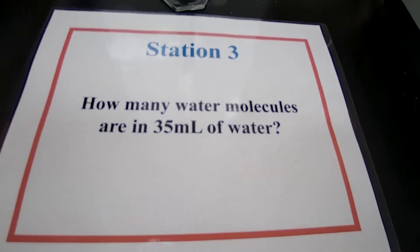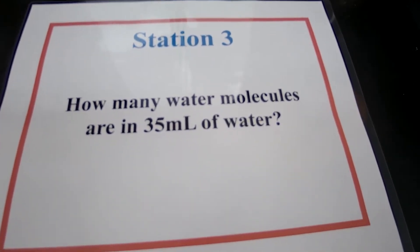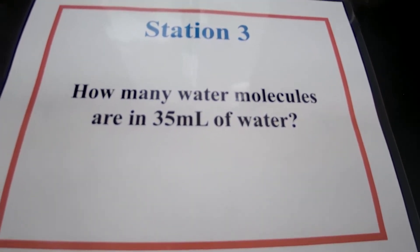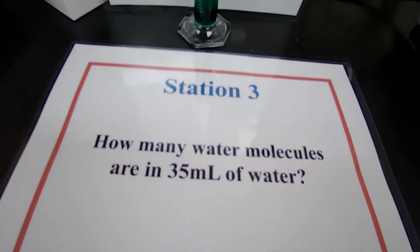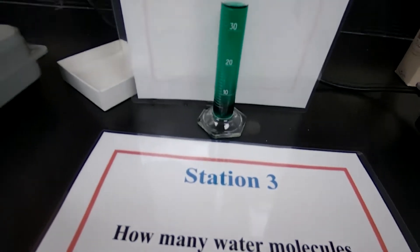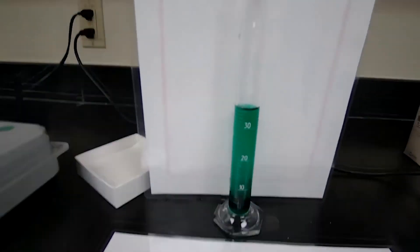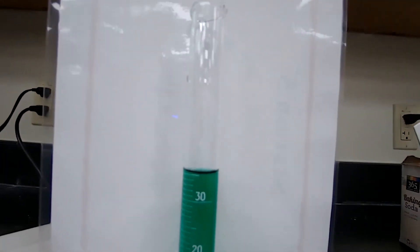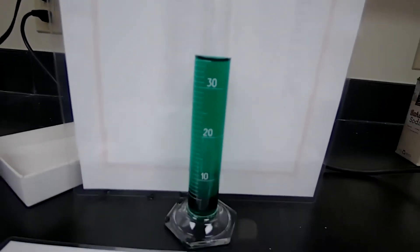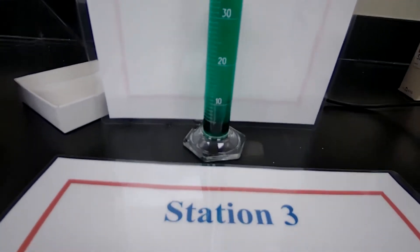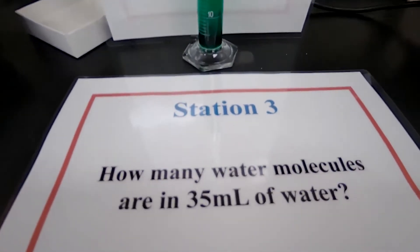In station 3, you have 35 milliliters of water. The green color is for better visualization so you can see the volume — just assume that it is pure water.